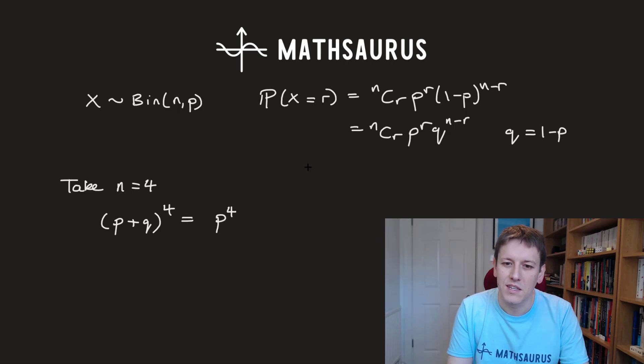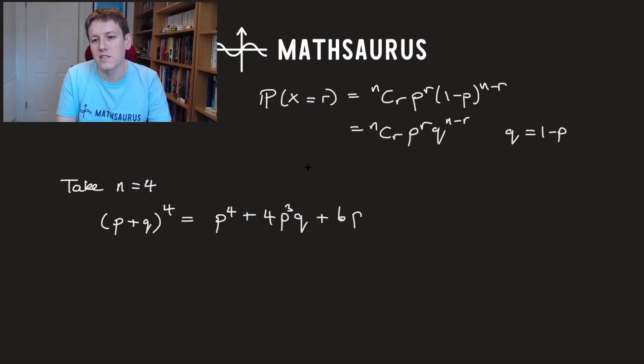So you'll know from binomial expansions, go back to my other videos on that if not, this is p to the 4 plus 4 times p cubed times q plus 6 times p squared times q squared plus 4 times p times q cubed plus q to the power of 4. Right, that's an ordinary binomial expansion.